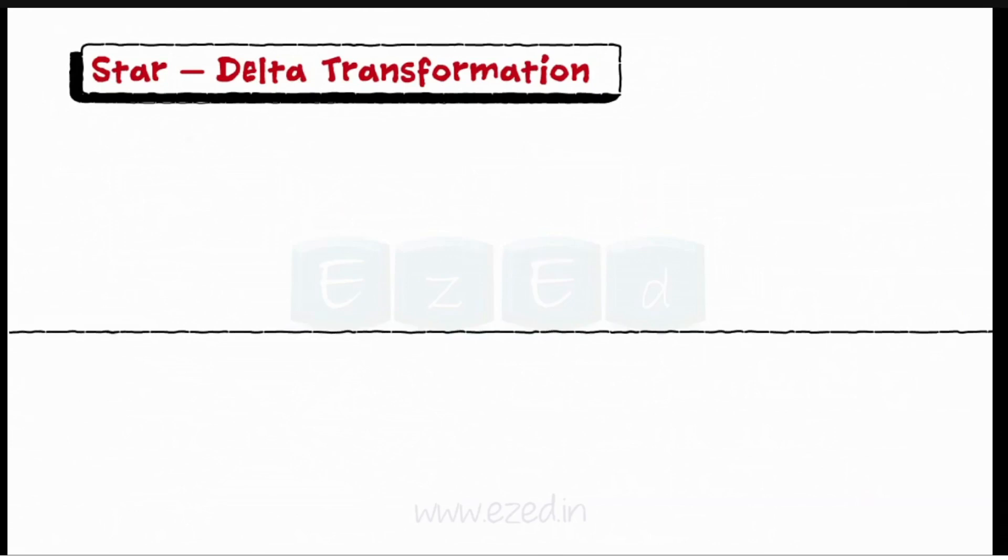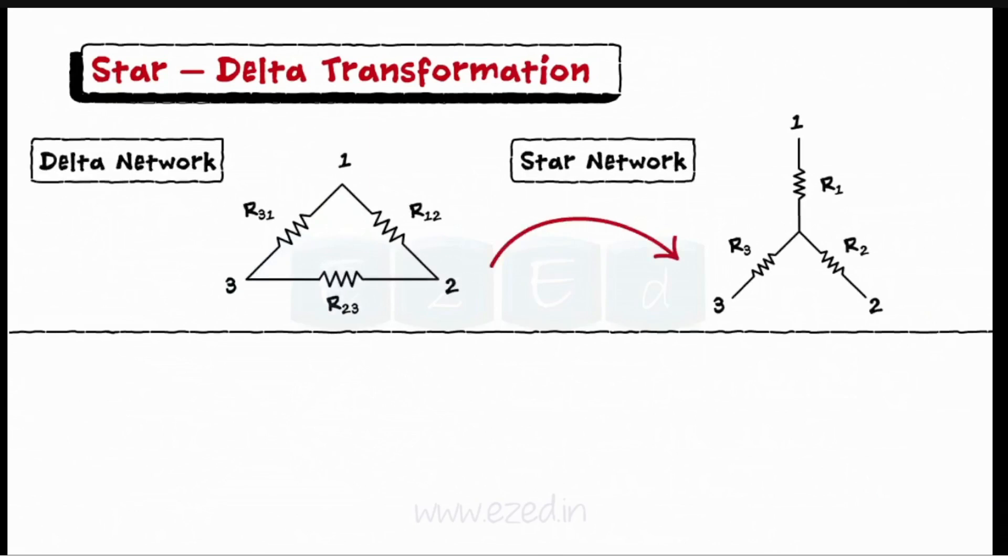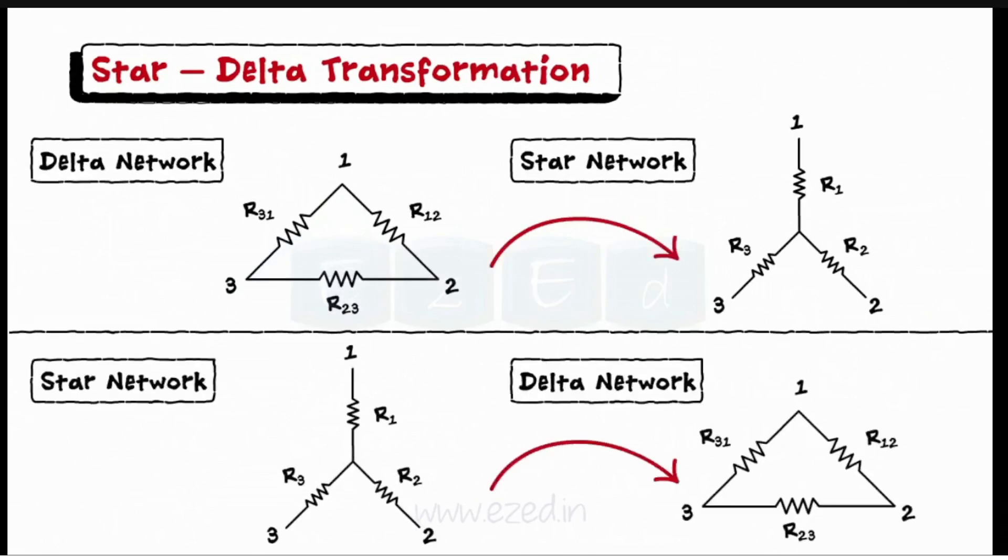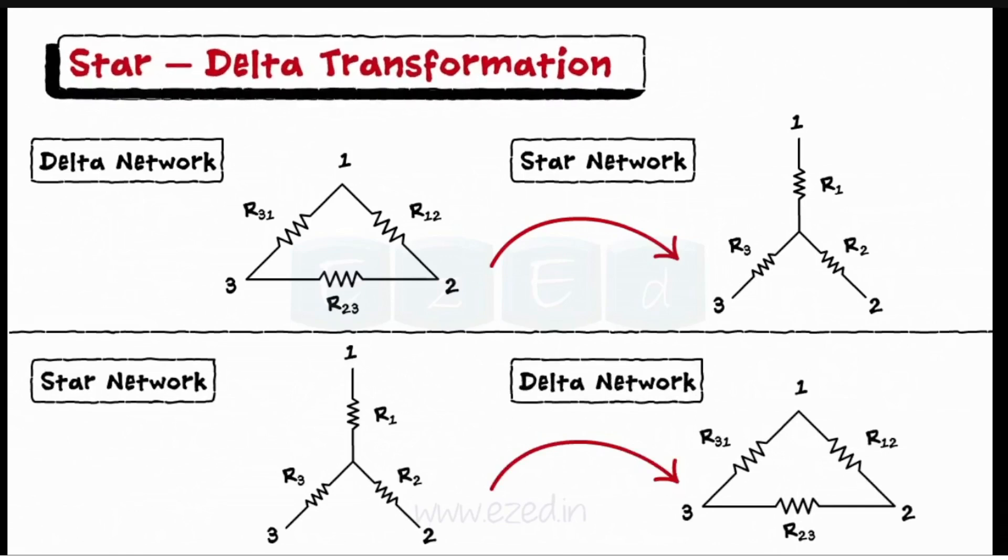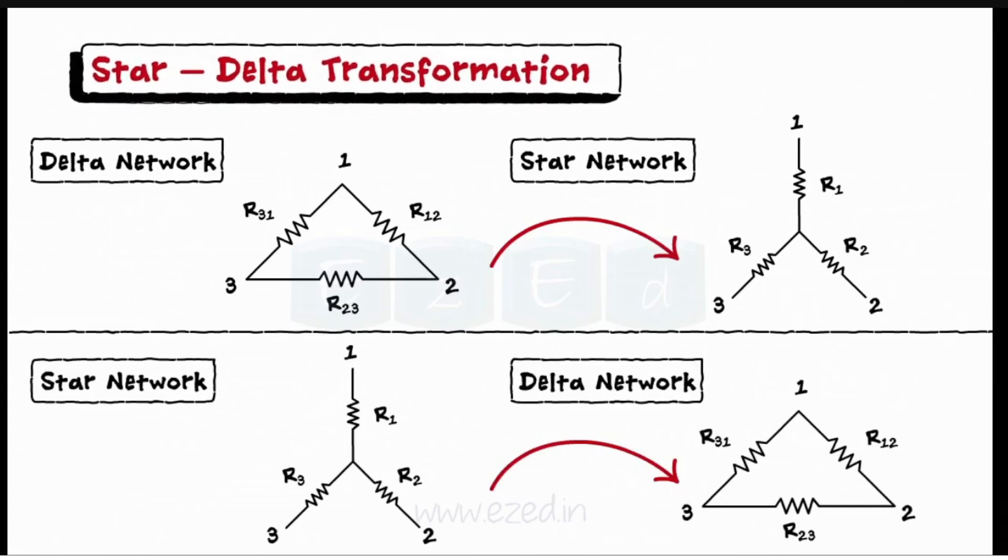In such cases, we use two conversion techniques. We either convert delta looking structure into star looking structure or star structure into delta. This is called star-delta transformation. Let's start with delta to star conversion.